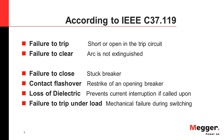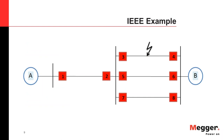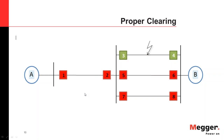Other conditions that can lead to Breaker Failure include: Failure to Close, which is a stuck breaker condition where it cannot close due to mechanical problems; Contact Flash Over, common when there is a re-strike of an opening breaker; Loss of Dielectric, where dielectric pressure falls below a certain level preventing current interruption; and Failure to Trip Under Load, where mechanical failure occurs during load switching rather than a fault condition.